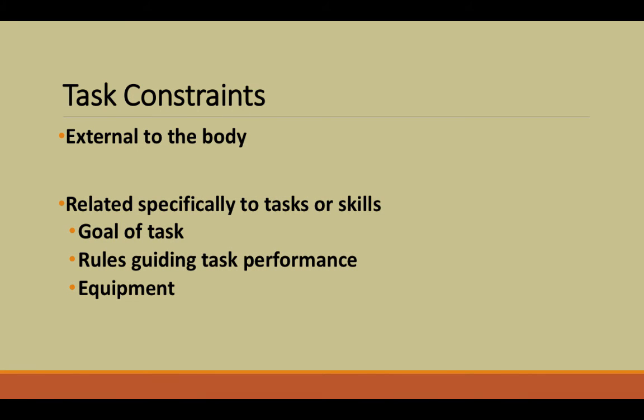Now moving on to task constraints. These are also external to the body and are related specifically to the task or skill we're trying to perform. Task constraints include the goal of the task, the rules guiding task performance, and the equipment used. For example, in tennis the goal is to hit the ball over the net, the rules are the court lines determining whether the ball is in or out, and the equipment is the type of racket — whether it allows more power or more control.